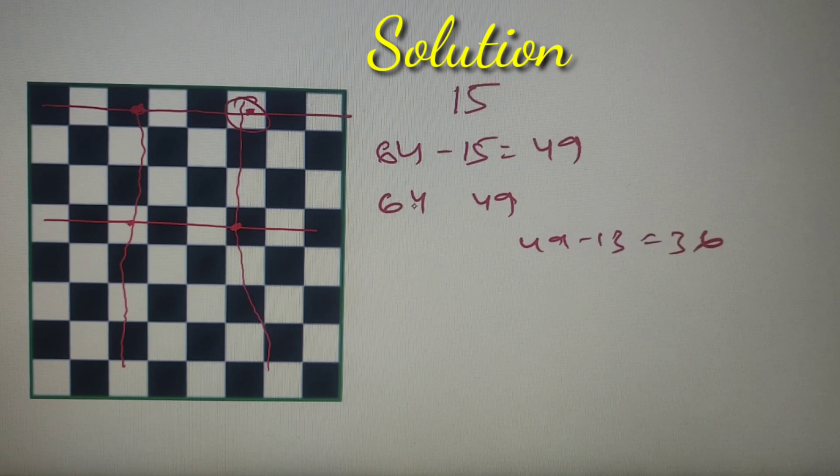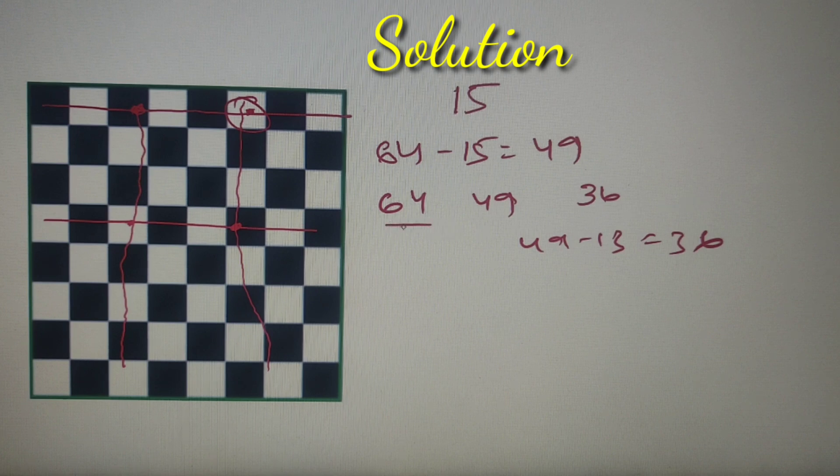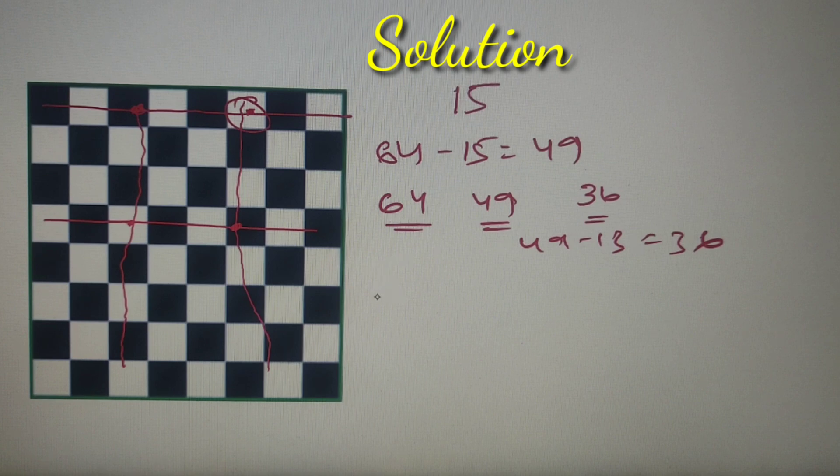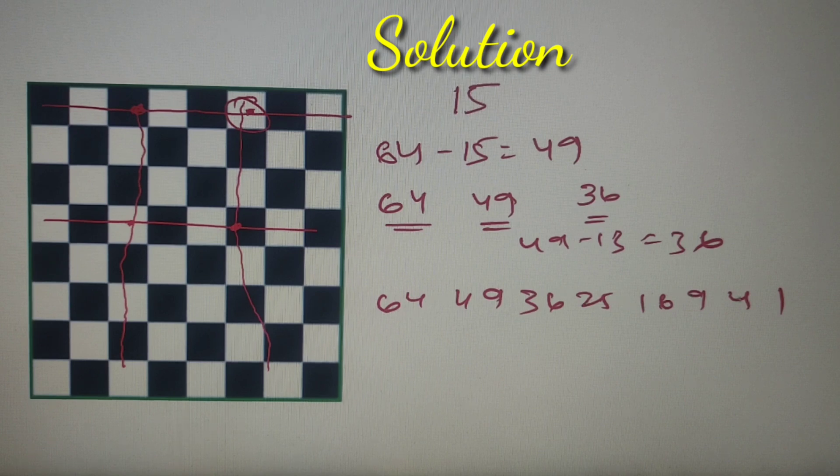So again counting: the first rook can be placed in 64 ways, second in 49, third in 36, and we can see that it is following a pattern. The first was being placed in 8 square ways, second in 7 square, third in 6 square. So I can say that all the rooks can be placed in 64, 49, 36, 25, 16, 9, 4 and 1 ways, which are the squares of 8, 7, 6, 5, 4, 3, 2 and 1.